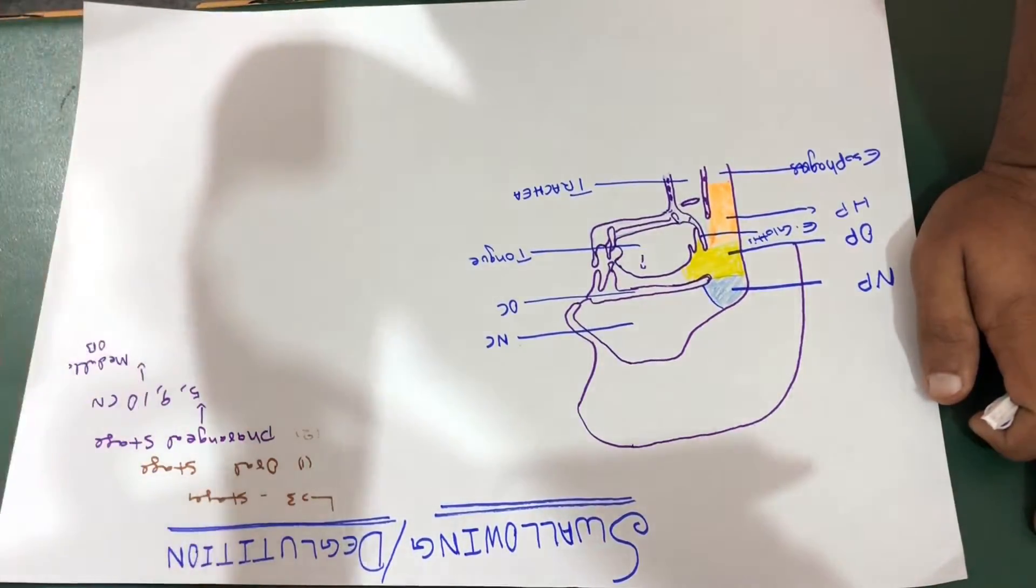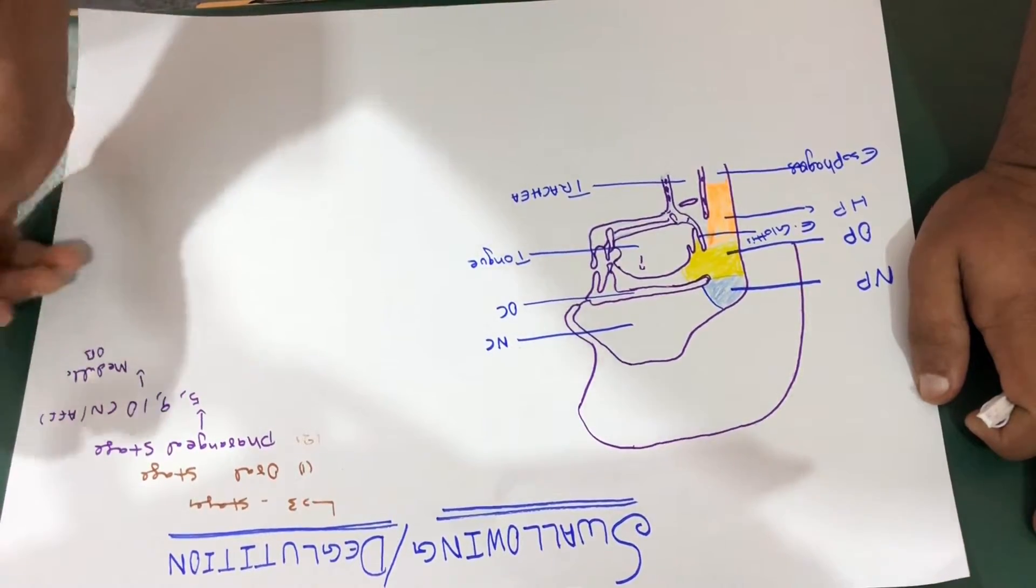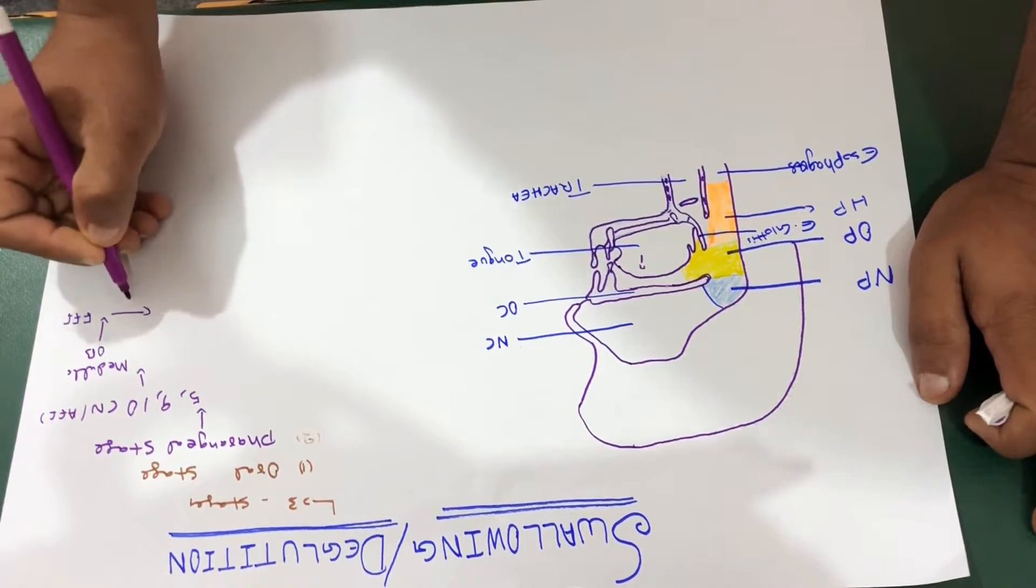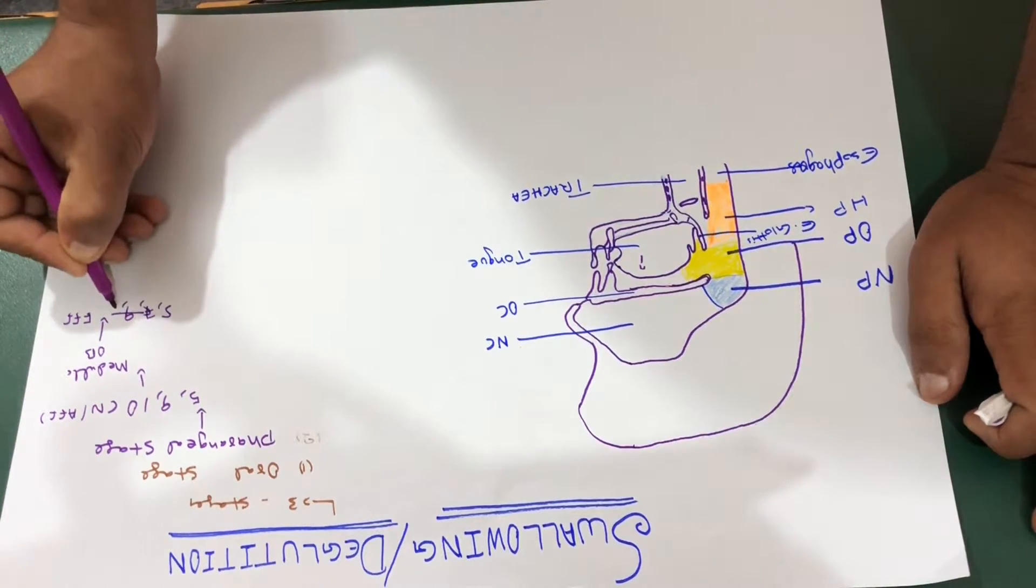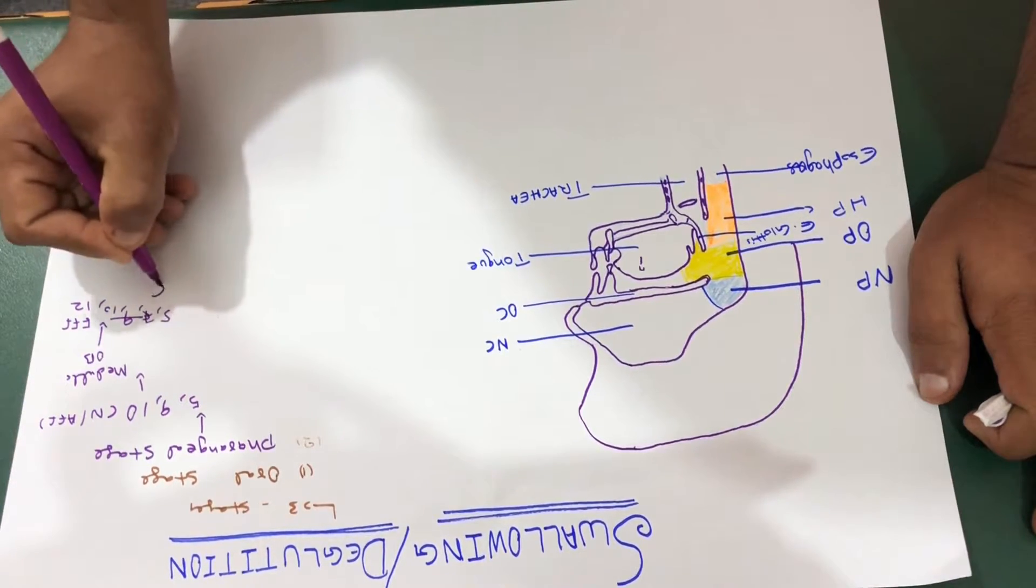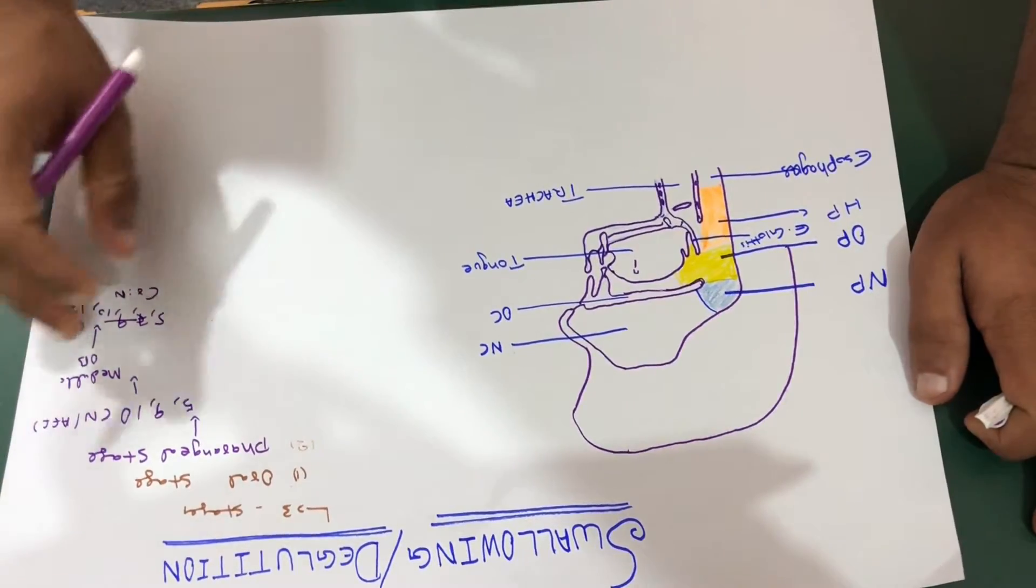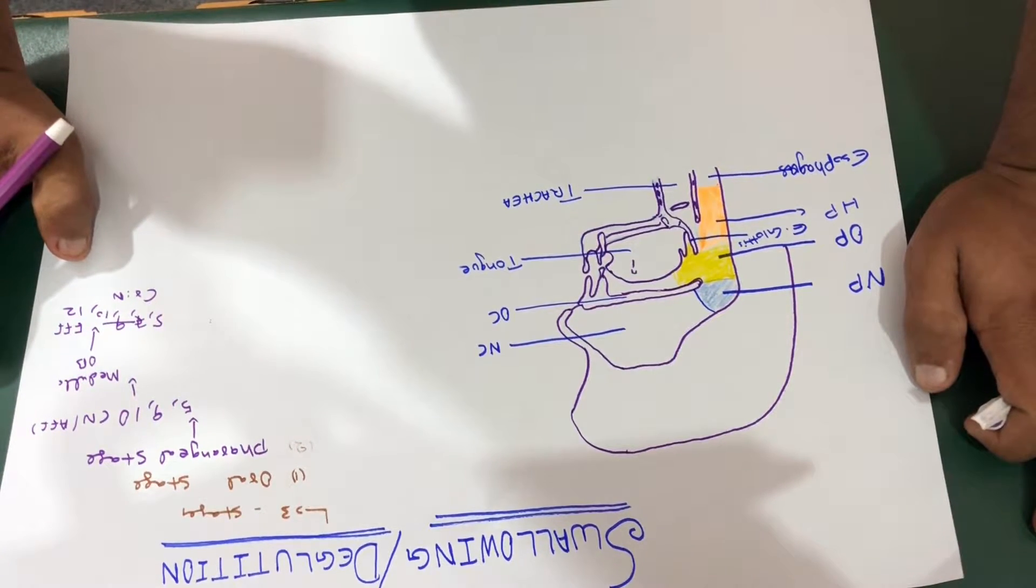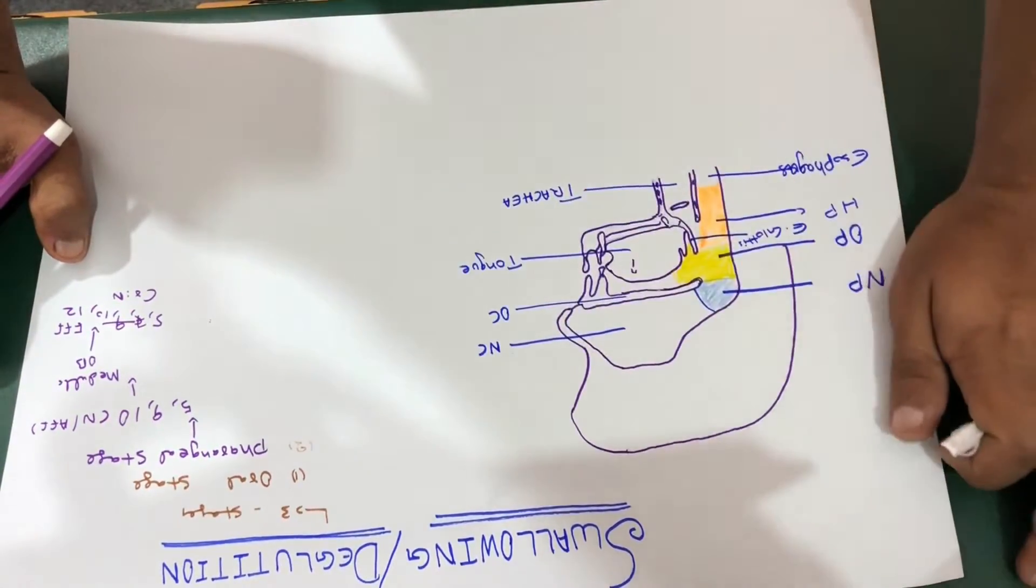From there, the efferent impulses come down via five, seven, nine, ten and twelve cranial nerves. And they come down via these nerves to musculature of pharyngeal and tongue and twenty muscles are involved in this stage, which help in the movement of this bolus into your esophagus.